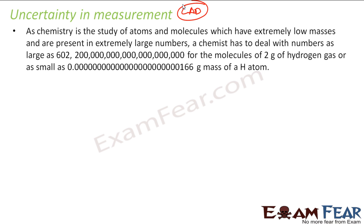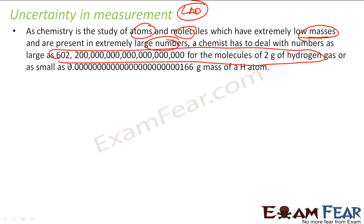In chemistry we study atoms and molecules which have extremely low mass — the mass is very low and the numbers are huge. For example, these many molecules are present in 2 grams of hydrogen. The mass of 1 gram of hydrogen is 0.000000...1.6 grams — so many zeros. We are dealing with huge numbers or such small numbers, and the possibility of making an error is very high. That is why we talk about uncertainty, because measuring such huge or small quantities is not easy.